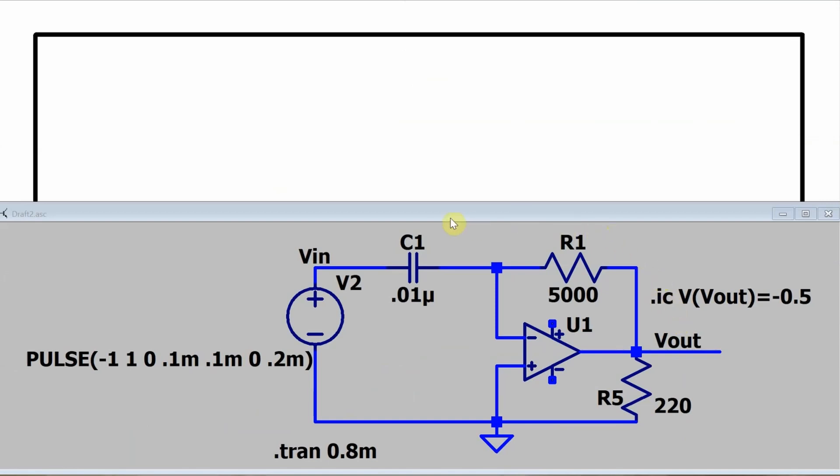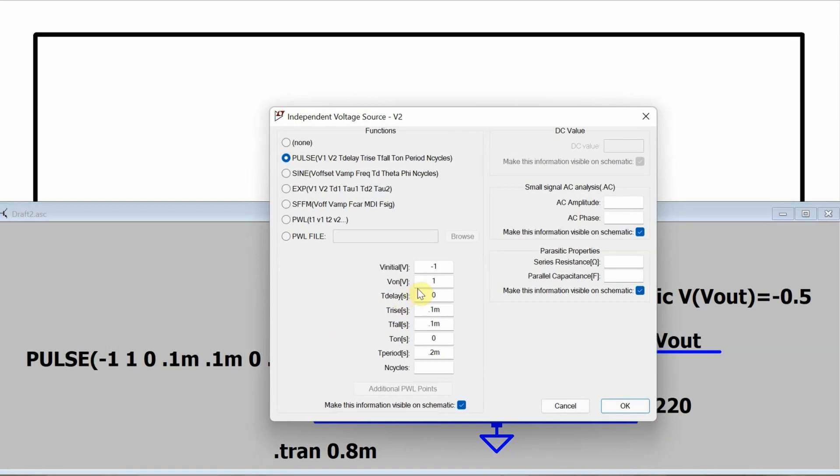So here you can see I've got my differentiator built. I'm using a universal op amp, so it's an ideal op amp. And you can see I've created this pulse wave. And what this pulse looks like is it has an initial voltage of minus one volt, an on voltage of one volt. Time delay to turn on is zero.